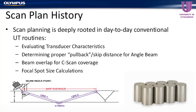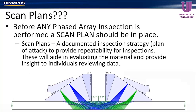Probably the best example I have is determining your skip distance for an angle beam examination. When you approach the inspection of a weld with angle beam shear wave, one of the first things the operator or technician does is take the angle of inspection they're using and measure back from the toe of the weld to ensure proper coverage. So there are several different things we perform, even with conventional UT, that we consider scan planning.